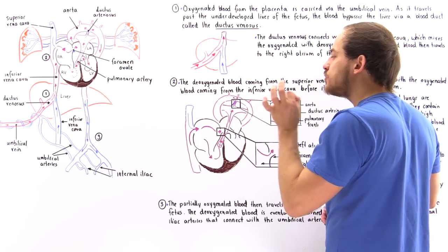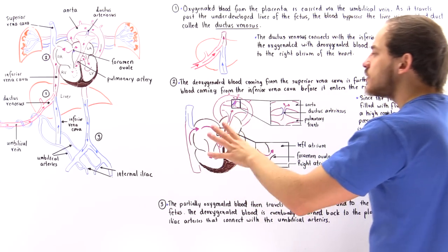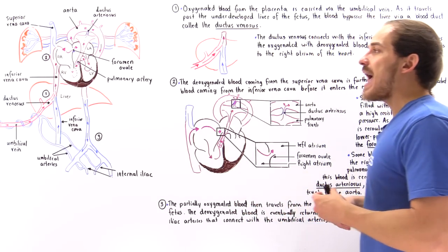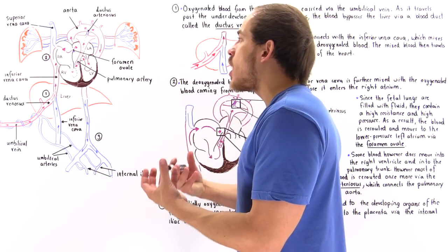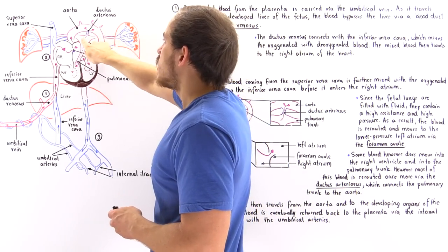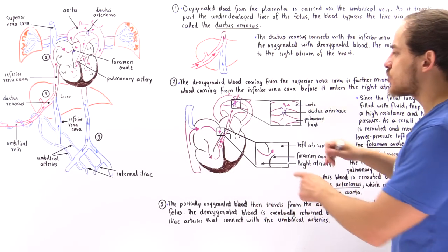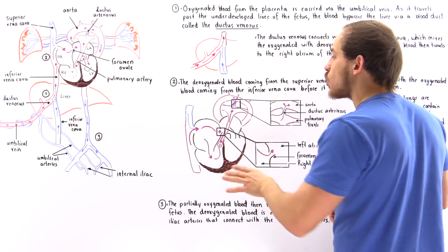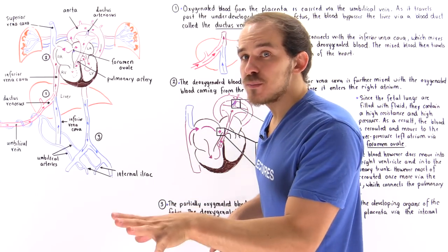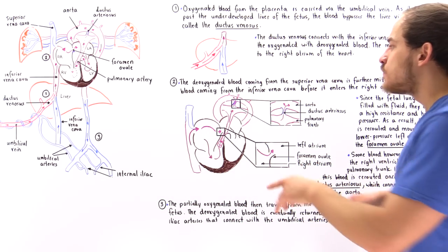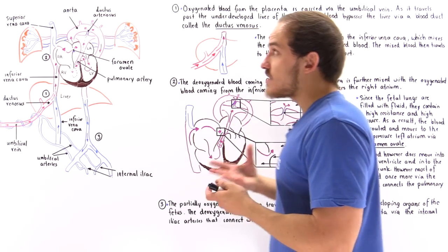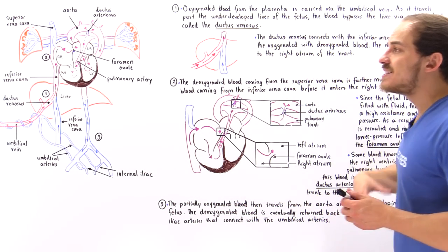In the pulmonary trunk, we don't want to waste oxygen and nutrients on the lungs because the fetal lungs are not yet developed and cannot exchange oxygen for carbon dioxide. So we need another duct — the ductus arteriosus — which connects the pulmonary trunk directly to the aorta. As blood fills the pulmonary trunk, most of it bypasses the pulmonary artery and enters the aorta via the ductus arteriosus. A small amount does enter the left and right pulmonary arteries to carry oxygen to the lungs, since the lungs need a small amount of oxygen to develop further.